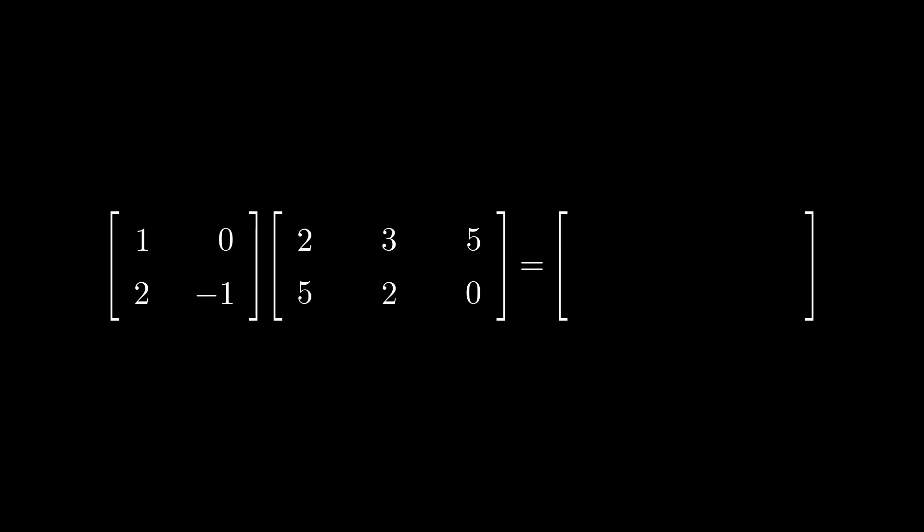When multiplying matrices, we have to do this weird operation where to get the element in the first column and first row, we take a sort of dot product with the first row of the left matrix and the first column of the right matrix.